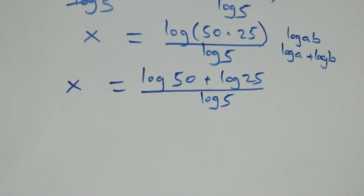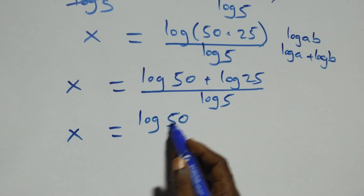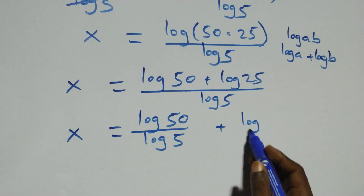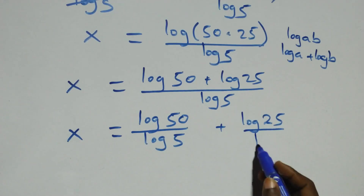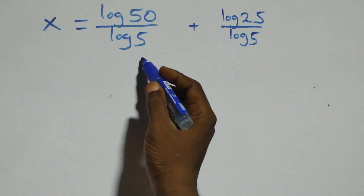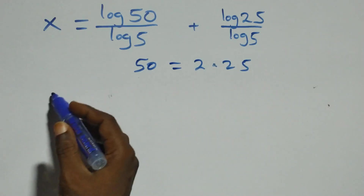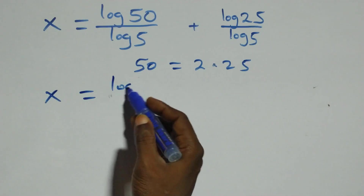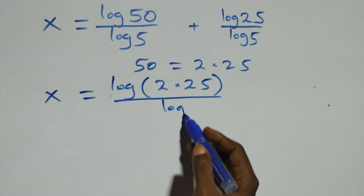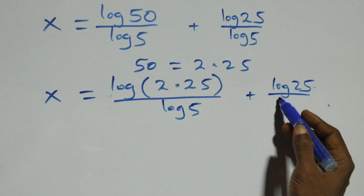Next we separate this into two fractions. We also express 50 as 2 times 25. So this becomes x equals to log of 2 times 25 over log 5 plus log 25 over log 5.